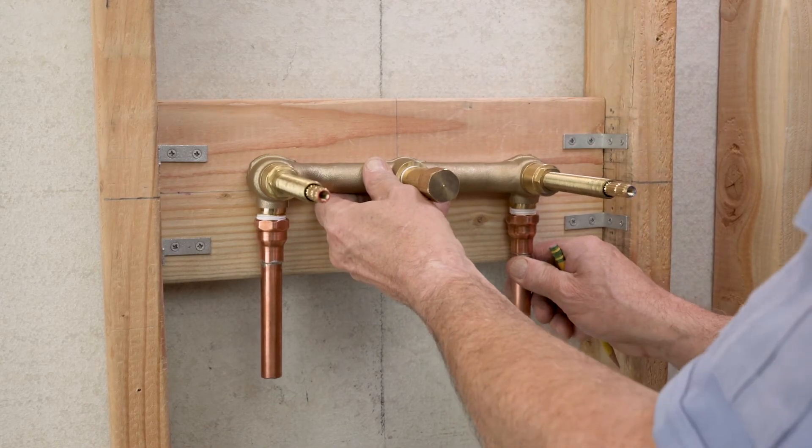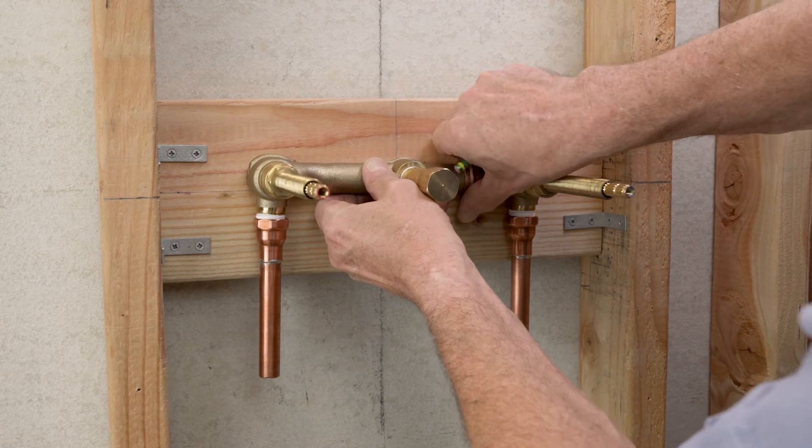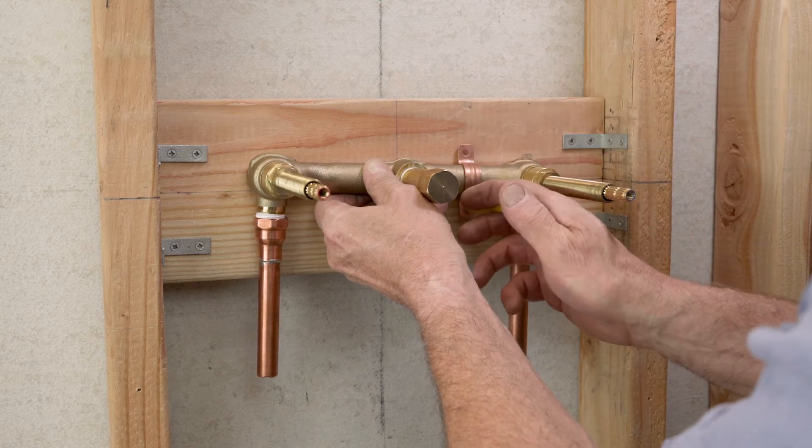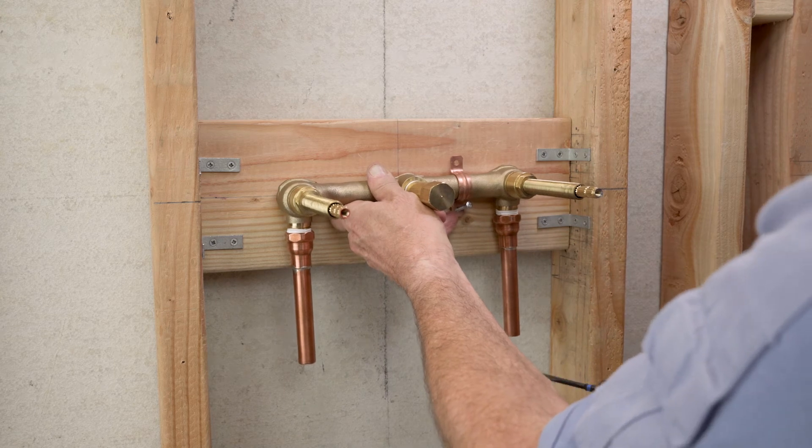Position the valve body with pipe and fittings attached against the wood cross support. Align it with the vertical and horizontal center line markings and attach it to the wood cross support with copper tube strips, clips, and screws.